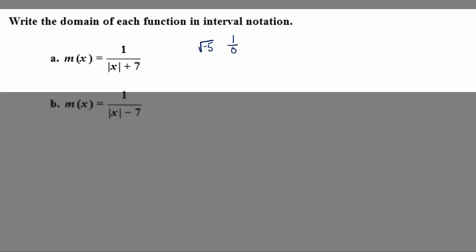For this type of function, where we don't have any square roots, nothing odd is going on, we're taking an absolute value, but you can take the absolute value of any number that you want. The only issue that might come up is for the denominator to equal zero.